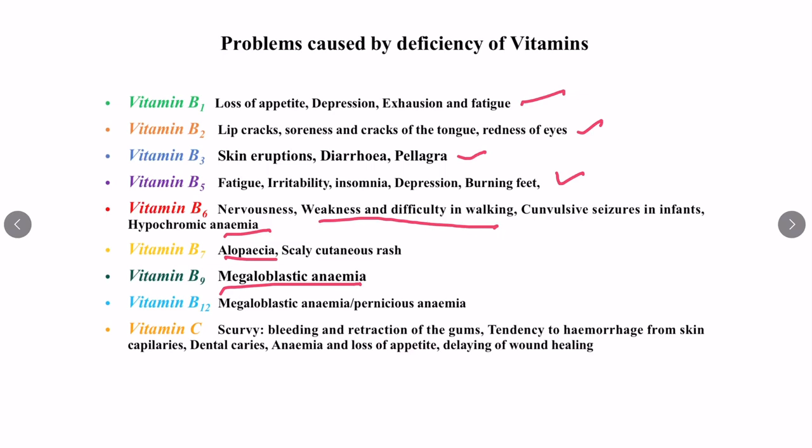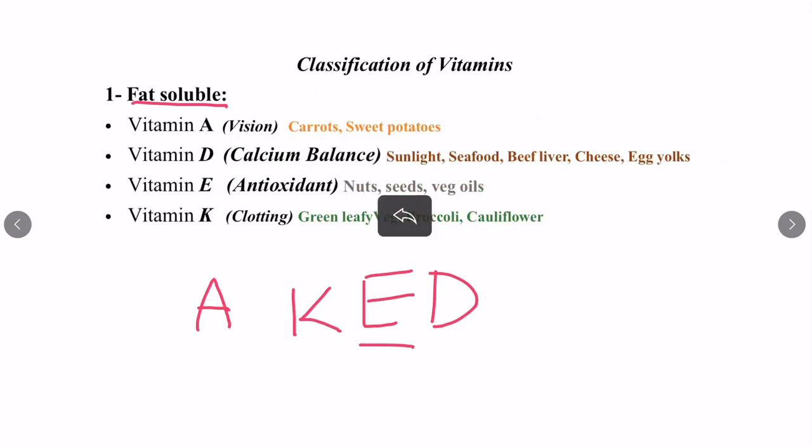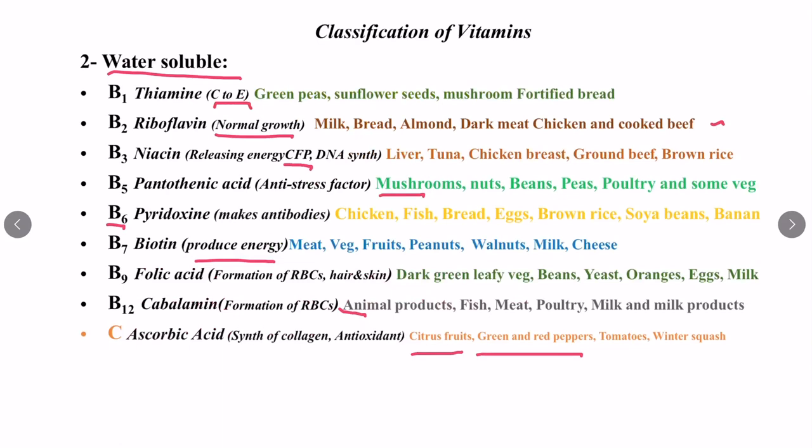Vitamin C deficiency can lead to scurvy, bleeding and retraction of the gums, tendency of hemorrhage from the skin capillaries, dental caries, anemia, loss of appetite, and delayed wound healing. To summarize: fat-soluble vitamins can be remembered as 'A fat kid' (A, K, E, D), and water-soluble vitamins are vitamin B complex and vitamin C — B, C. That's it for today.